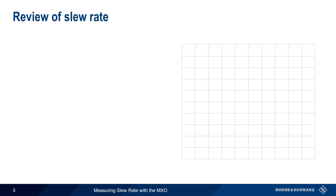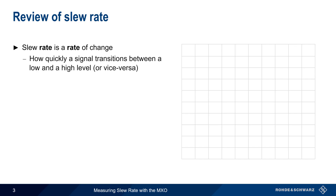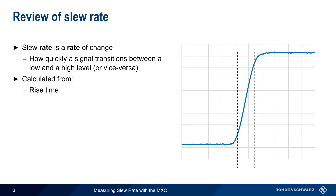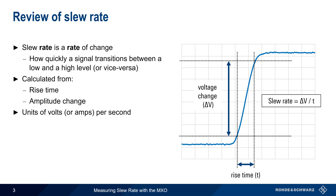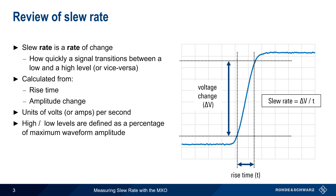As the name implies, slew rate is a rate of change. Slew rate describes how quickly a signal transitions between a low level and a high level, or vice versa. It's calculated from the rise time and the change in amplitude — that is, the amount of voltage or current change. Slew rate therefore has units of volts or amps per second. The high and low levels are defined as percentage values relative to the maximum waveform amplitude.